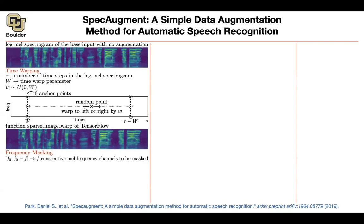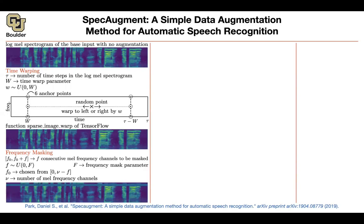Frequency masking is that you're going to mask a portion of your frequencies. Visually speaking it's very simple — you mask F consecutive frequencies. F is chosen at random from a uniform distribution, and capital F is a hyperparameter that you choose. F_0 is where you cut, and nu is the number of mel frequency channels. But visually speaking, it's not that hard — that's what you're doing.